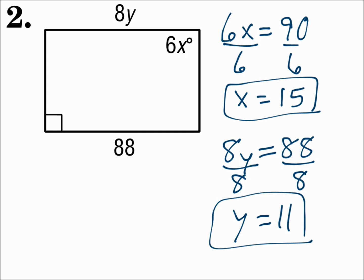In a parallelogram, opposite sides are congruent. And if it has one right angle, then it has four right angles.